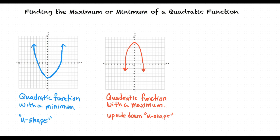The vertex of a quadratic function is either the maximum or minimum of the graph. It is important to note that a quadratic function can only have either a maximum or a minimum, not both.